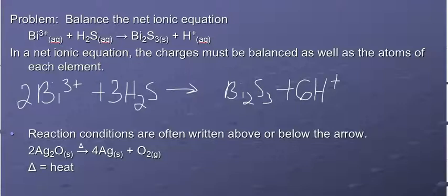The charges should be balanced as well. There's two Bi's with a 3 plus charge, that's 6 plus on this side because H2S doesn't have a charge, it's neutral. On the product side, Bi2S3 is neutral, there's no charge.